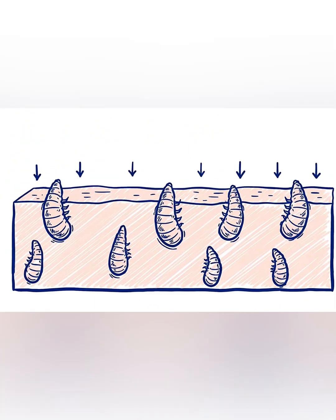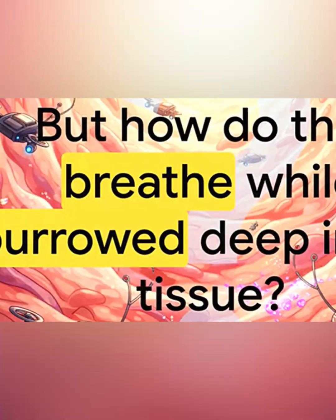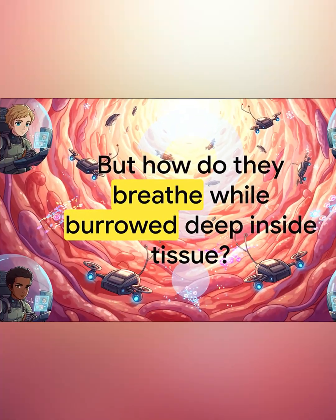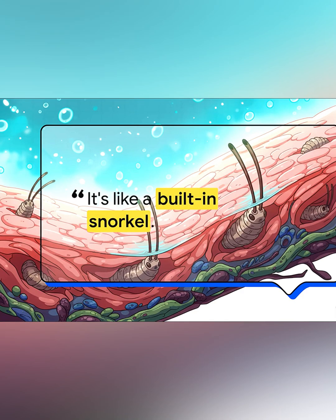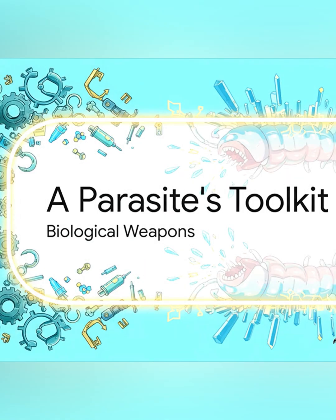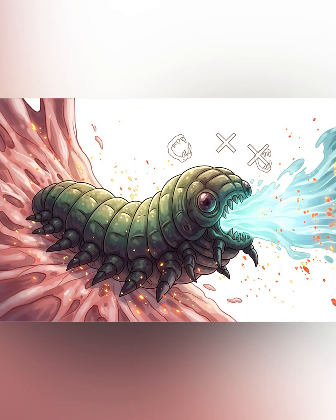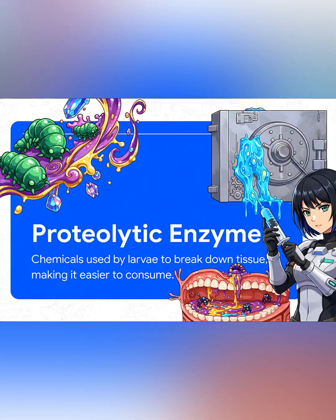You may see tiny white worms coming out when they try to breathe through spiracles — little breathing holes pointing up towards the air, like a built-in snorkel. Proteolytic enzymes combined with bacterial action break down tissue, making it easier for larvae to consume.